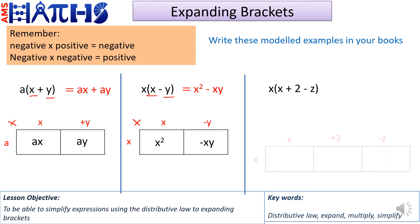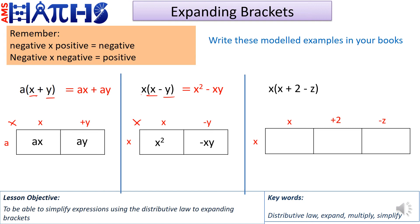For the last one on this slide, pause the video and attempt the question, then resume to check the answer. We split the three terms in the bracket: x, plus 2, and minus z, with the number in front going to the left. Multiplying: x times x is x squared, x times 2 is 2x, and x times minus z is minus xz. Our final answer is x squared plus 2x minus xz. Notice that even though we have x's throughout, they are different terms — x squared, x, and xz — which cannot be combined, so the answer remains the same.